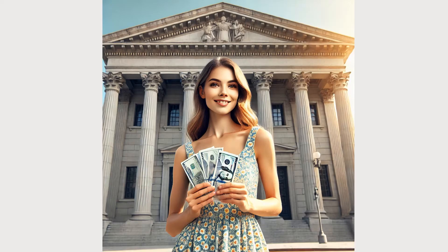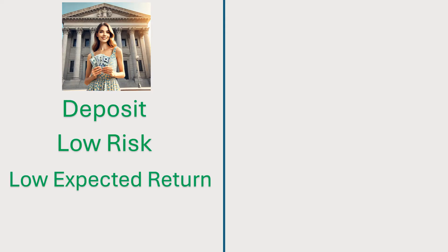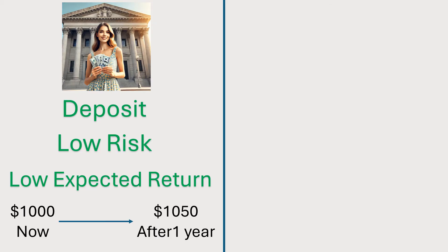Julia decided to put her $1,000 as a deposit in a bank. Banks are safe, so she has a lower risk. Taking less risk means being compensated by a lower return, so after one year, her savings will be $1,050.